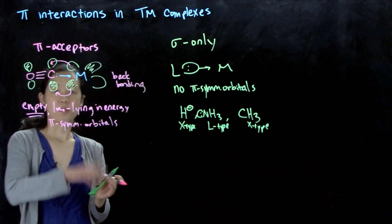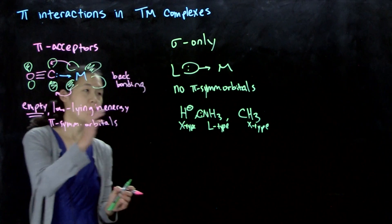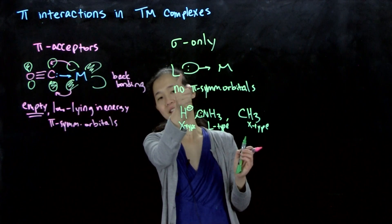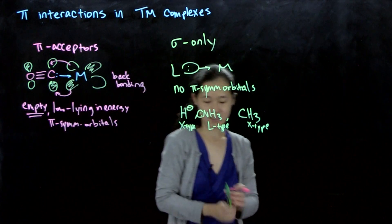It's called backbonding because it's going from the metal to the ligand, as opposed to more normal front bonding, which is from the ligand to the metal. Front bonding is not a term, by the way.